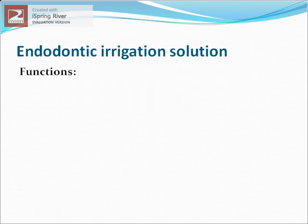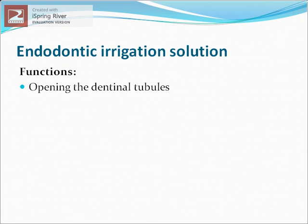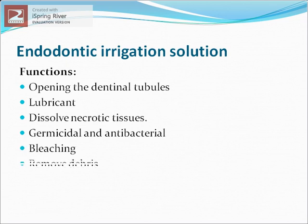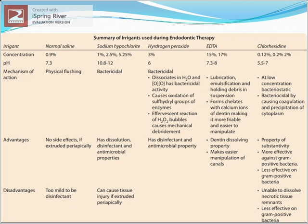Mechanical preparation of the root canal system is usually assisted by endodontic irrigation solutions. Their functions include: opening dentinal tubules by removing the smear layer, acting as a lubricant to facilitate instrumentation, dissolution of necrotic tissues, germicidal and antibacterial effects, bleaching action, and removal of debris from lateral and accessory canals. A summary table covering all irrigants used during endodontic therapy is provided.